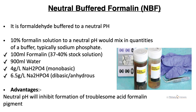To prepare neutral buffered formalin, we take 100 ml of formalin in 900 ml of water with 4 g/L of monobasic acid and 6.5 g/L of dibasic acid, mix it, and obtain a 10% formalin solution. The advantage is that the neutral pH will inhibit the formation of troublesome acid formalin pigment seen on the slide.